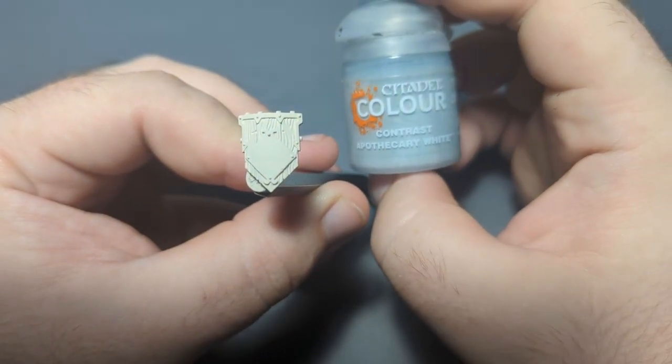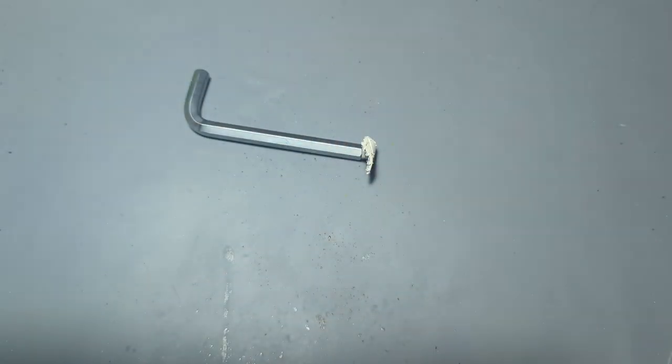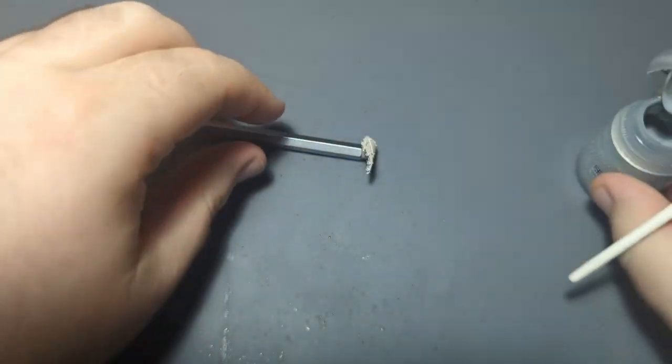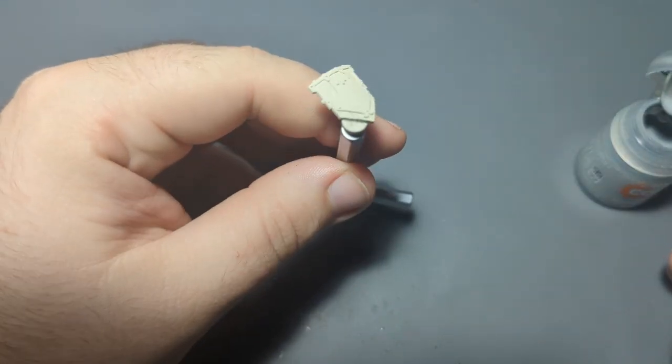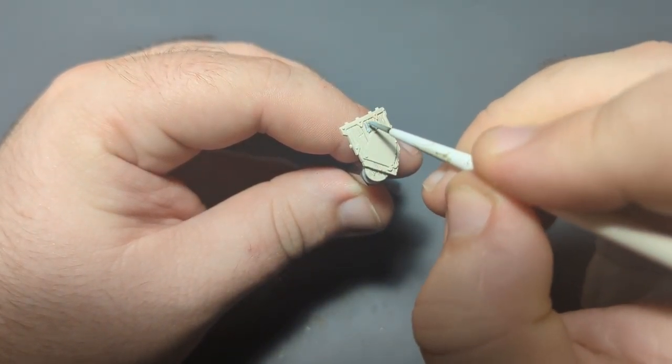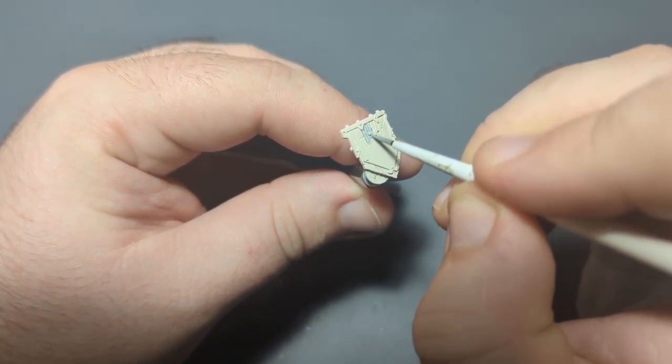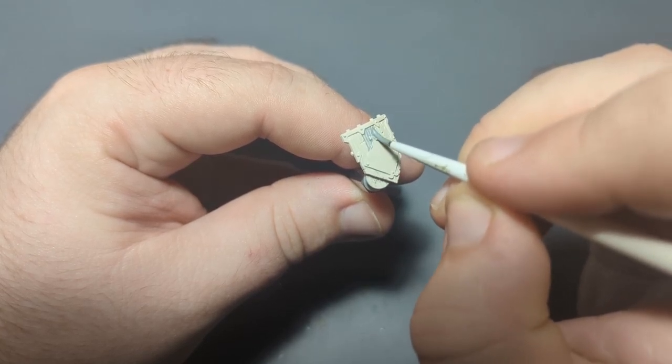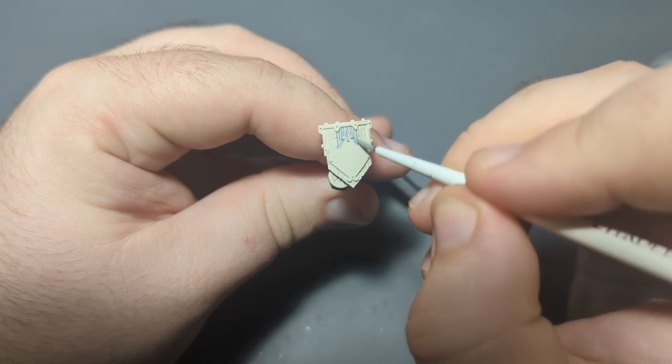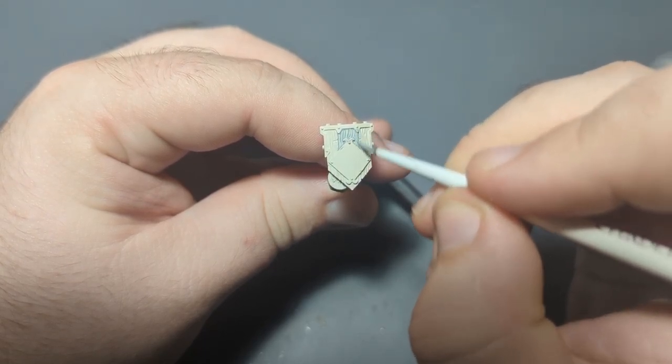We're going to start off with Apothecary White Contrast Paint. Give it a good shake because this paint likes to separate, and we're starting with this because the blue on the outside of the shield will cover over this just fine if we make a mistake. This will not cover over the blue quite as well, so we can be a little sloppier with this one and then be careful with the blue.